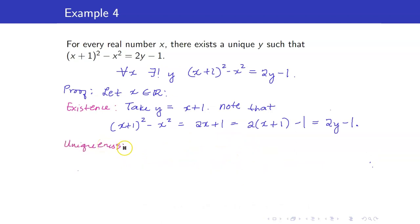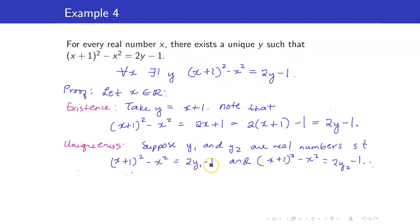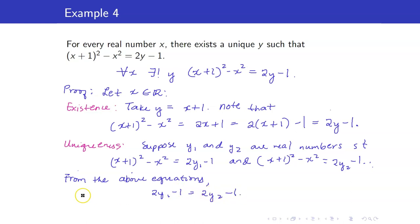For uniqueness, suppose y₁ and y₂ are real numbers both satisfying the equation. From the two equations, they are both equal to the same expression, so 2y₁ − 1 = 2y₂ − 1. By manipulating these two equations, we get that y₁ must equal y₂. That concludes the proof.